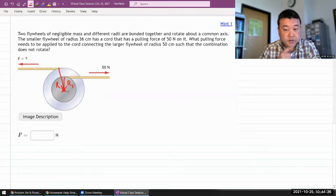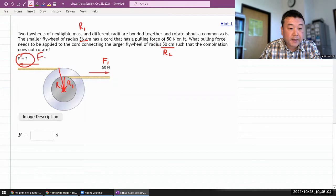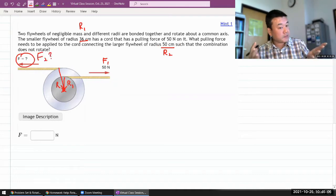So this is my center of rotation. The smaller flywheel of radius has a cord that has pulling force of, let me just label it F1 on it. But pulling force needs to be applied to the cord connecting the larger flywheel. So this is my R1, this is my R2. And so it's asking what is my F2 so that it does not rotate.